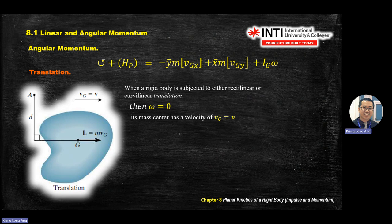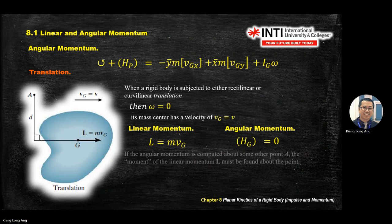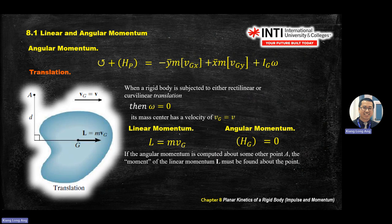For translation: since there's no angular motion, omega = 0. So you have linear momentum L = mv but no angular momentum H at the center of mass. The x̄ and ȳ terms are also zero because you're measuring from the center of the body — that's why those terms cancel.